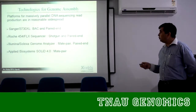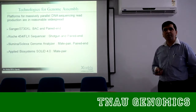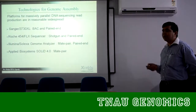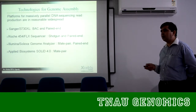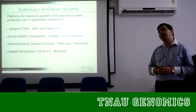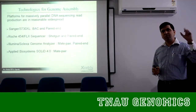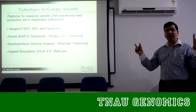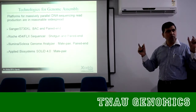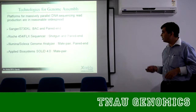In a Sanger, what you do is back-end sequencing. You create a BAC library of your plant which you are planning to sequence, and then you do the back-end sequencing. You have around 100 BACs containing 150 KB of the fragment. If you sequence the back-end, you know that the forward reaction and the reverse reaction of this BAC is separated by 150 KB.